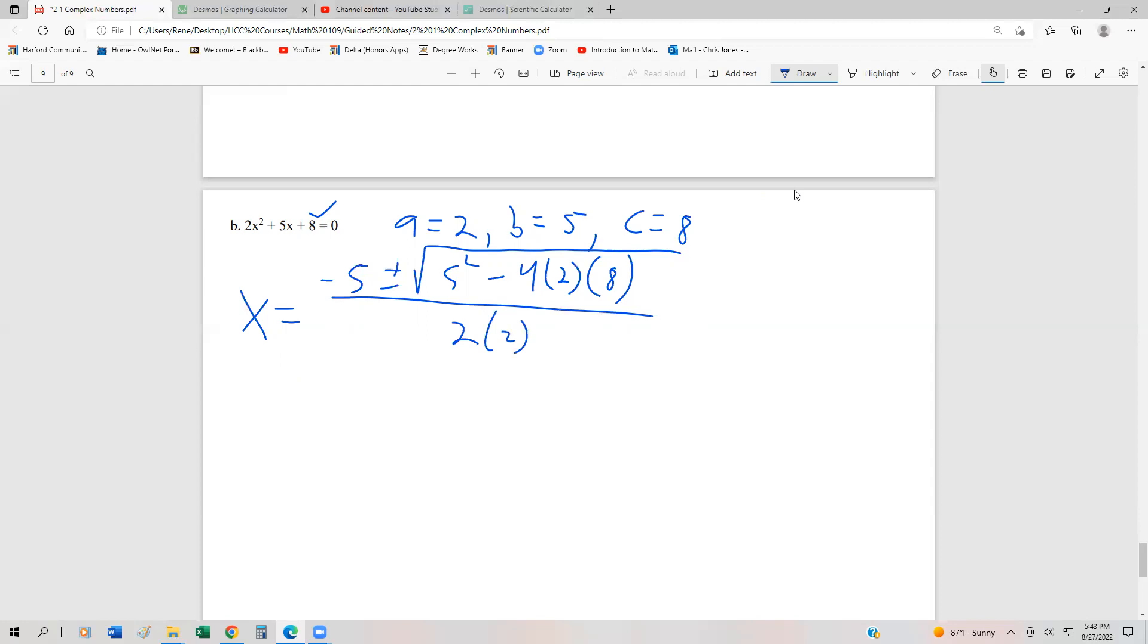Now we're going to simplify. That's negative 5 plus or minus the square root of 25 minus 4 times 2 is 8 times another 8 is 64. And now we can see that we're going to get a complex sort of root here. And in the denominator, 2 times 2 is 4.